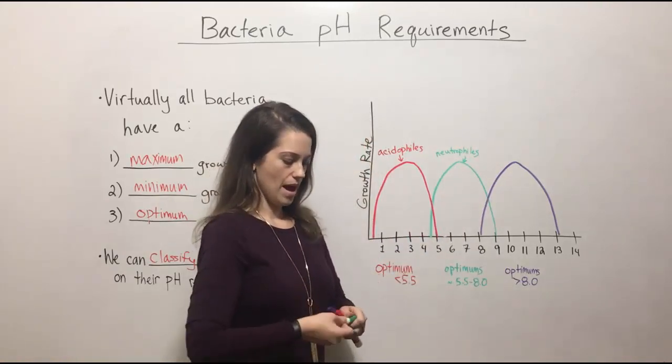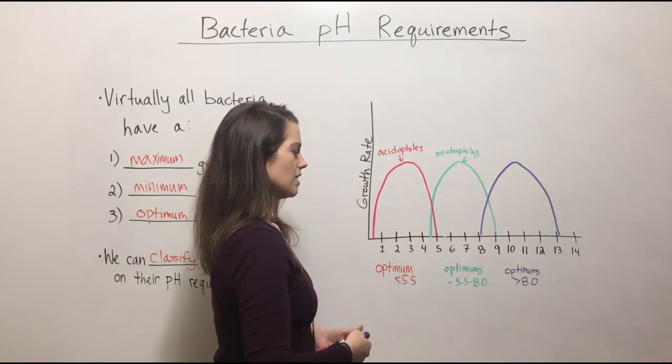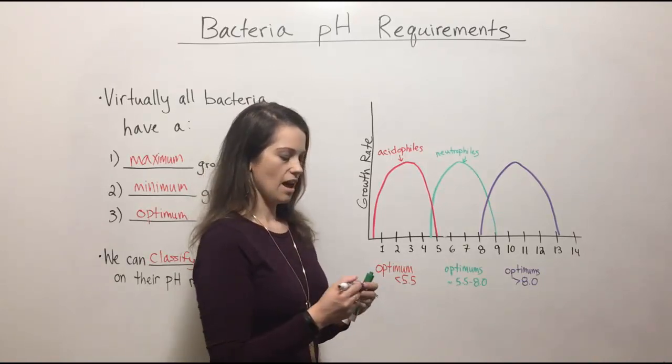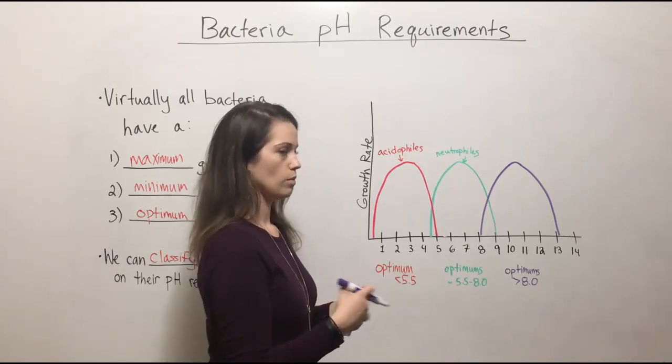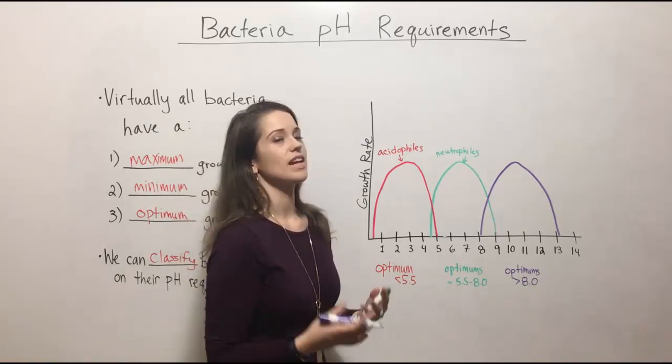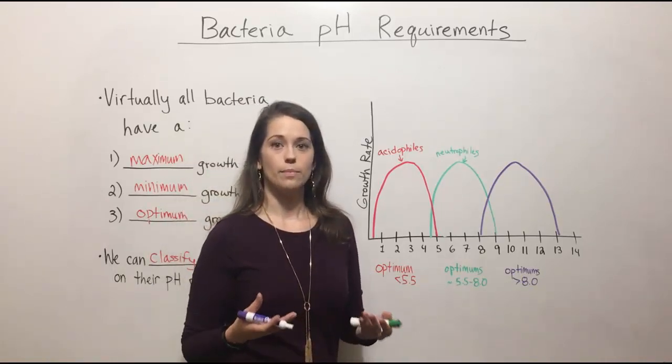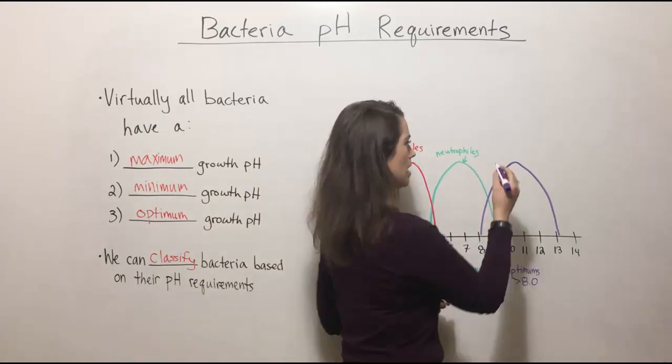And then finally we have the bacteria that have optimum pHs of 8 or more, so basic pHs. Remember that alkaline is another name for basic and so these are what we call alkalophiles.